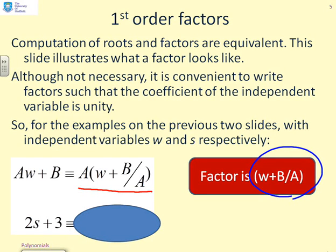Now, you'll notice we've written this in monic form, i.e. we've made the coefficient of the independent variable w equal to 1. And that's quite convenient, because what you will have noticed is that inside this factor, the root has appeared. The root being this B over A term.